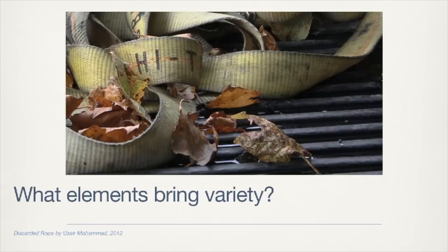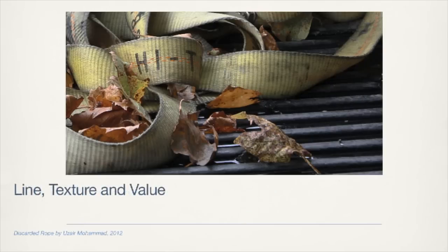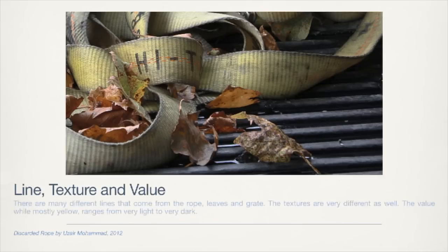What elements bring variety to this photo? Line, texture, and value. There are many different lines that come from the rope, leaves, and grate. The textures are very different as well. The values, while mostly yellow, give the work unity — they range from very light to very dark.